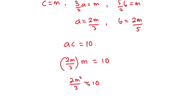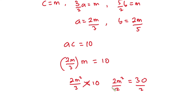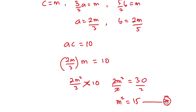Simplifying the left-hand side, we have 2m squared divided by 3 is equal to 10. Cross-multiplying, we have 2m squared is equal to 30. Dividing both sides by 2, we have m squared is equal to 15. Let's call this equation star.